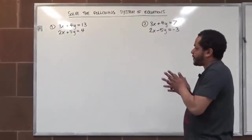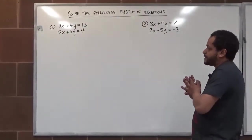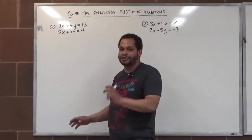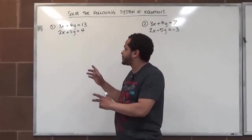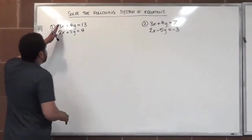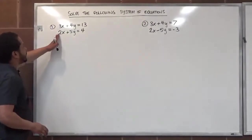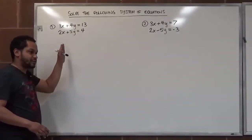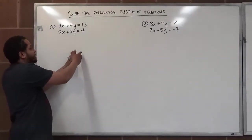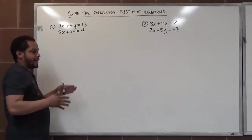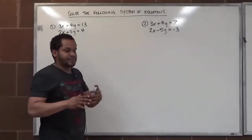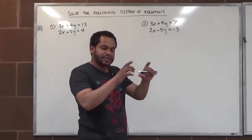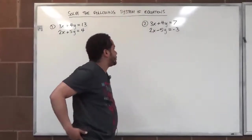For this problem, I want to solve each variable independent of the other so I have no errors in my solutions. Sometimes you can make a mistake while canceling out a variable, and your solution will propagate the error into the next one. It's better to solve both independently, and I'm going to show you how to do that now.